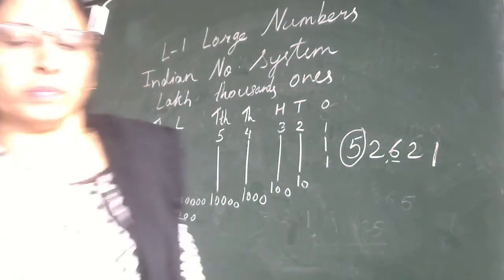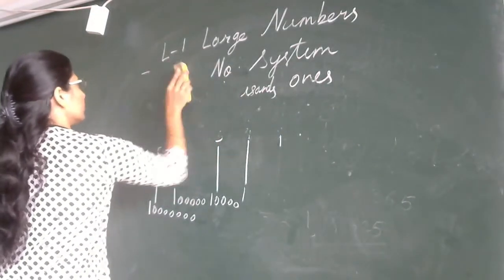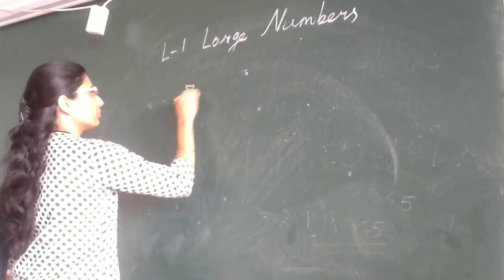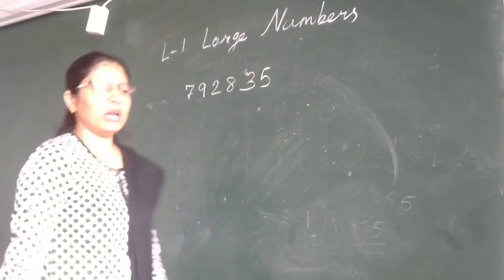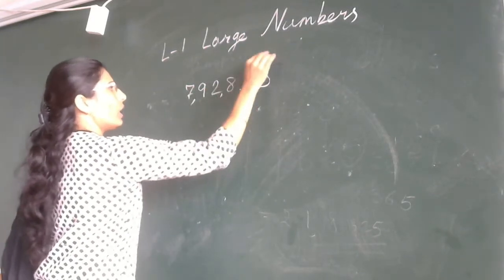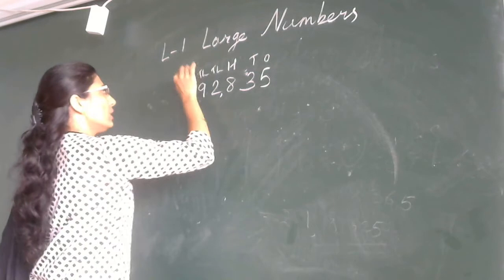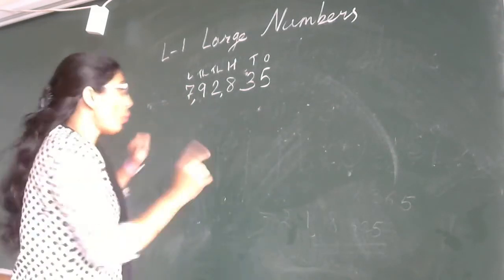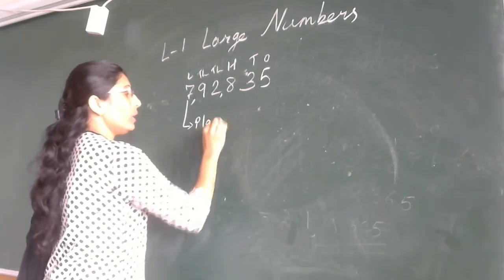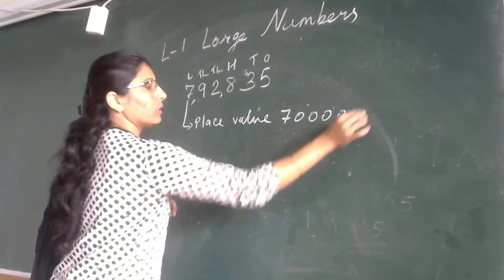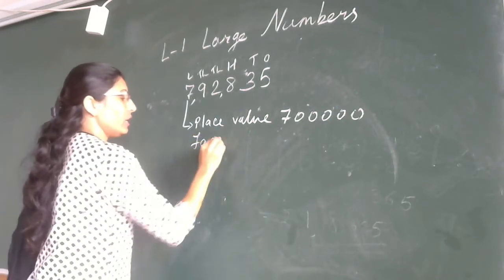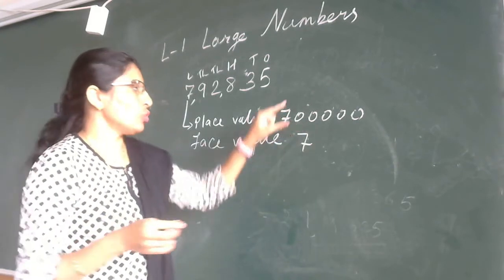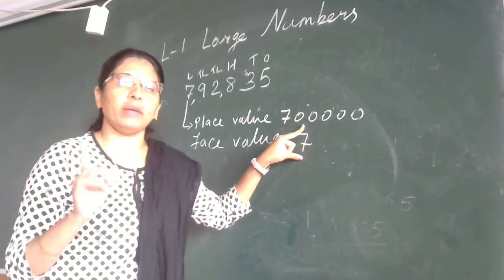Let us take some examples with a large number. Here we can see the places: ones, tens, hundreds, thousands, ten thousands, lakhs. Seven is in the lakhs place — what is its place value? Place value will be seven lakhs. What is its face value? Face value is simply seven — the number itself as it appears. So face value depends on the digit, and place value depends on the position.